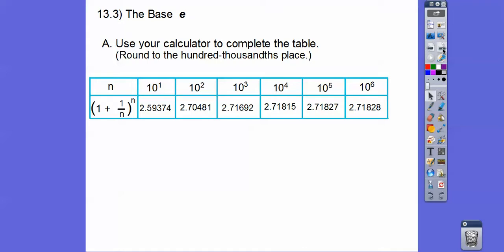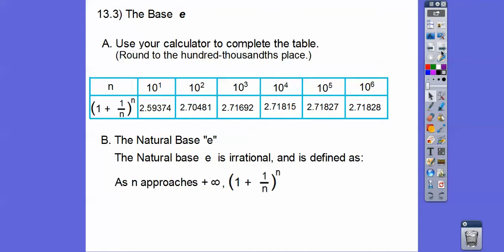And what happens is as N approaches infinity, this number is approaching this guy right here, which is base e. So the natural base e, it's an irrational number, and it's defined as N approaches infinity. This number approaches e right there.